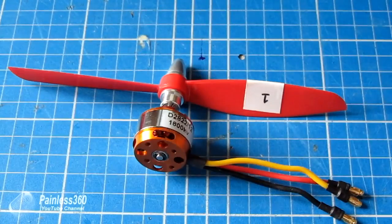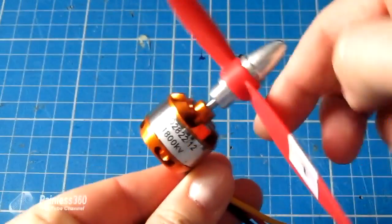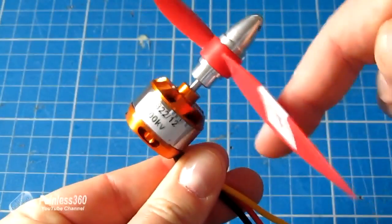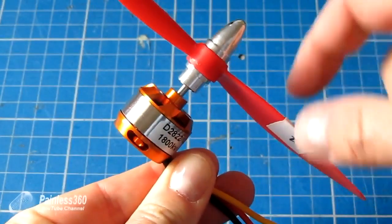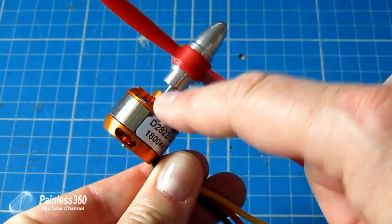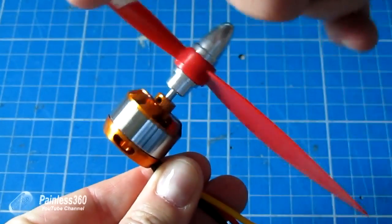Secondly, let's talk about inrunners and outrunners. This is an outrunner, so you can see the can actually moves with the prop. An inrunner is one where the can on the outside of the motor stays still and the prop rotates in the middle.